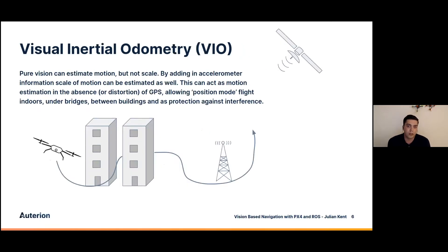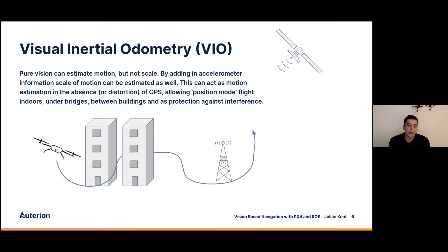The third interface is visual inertial odometry — a bit of a mouthful. This is what happens when you don't have GPS. You can use a camera to estimate your motion, but cameras don't give you a sense of scale. You could be looking at a big car far away or a toy car close up and you cannot tell the difference. So we add an accelerometer: by measuring absolute values of acceleration we can give our motion scale, and then we can tell with just a camera and a built-in accelerometer how much we're moving. Use cases include flying inside buildings and flying in areas with very high GPS noise — under power lines, under bridges, or between skyscrapers.